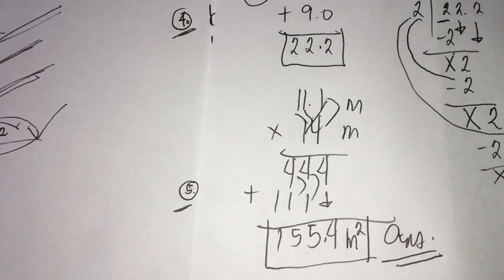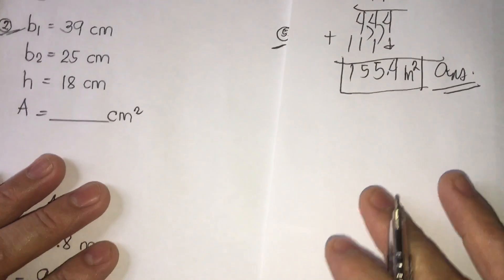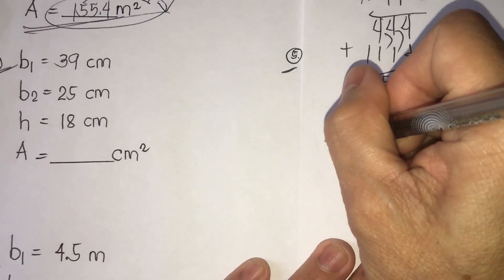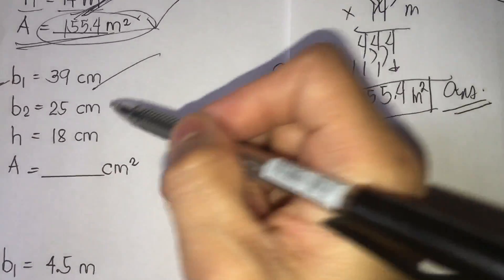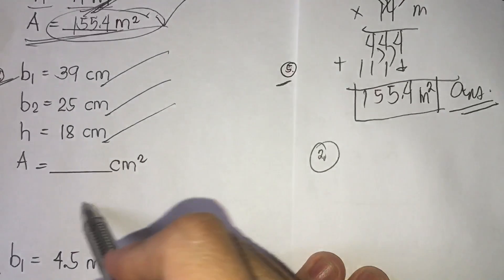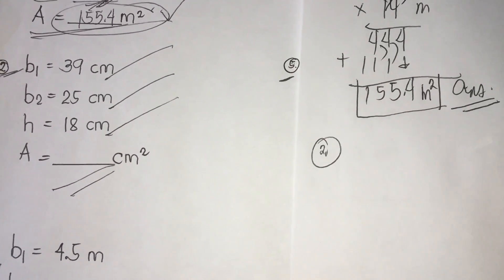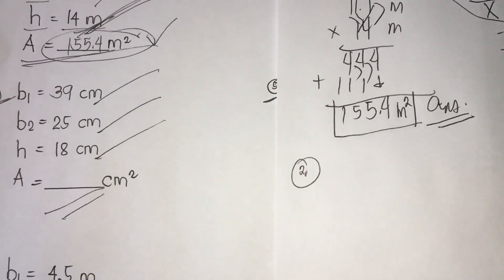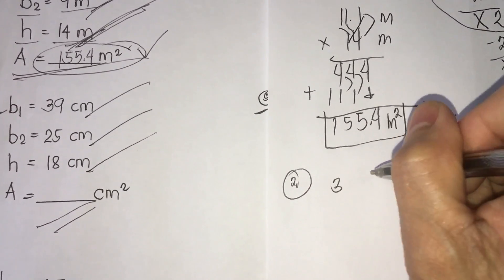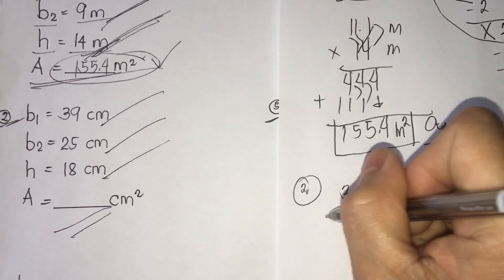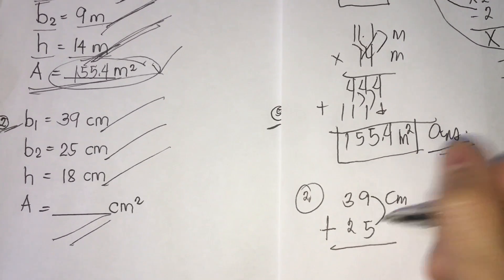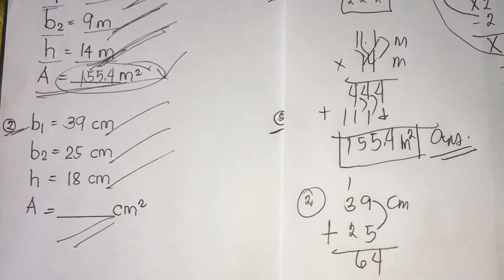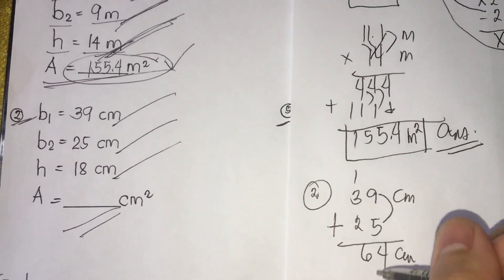We're going to proceed to number two. Same procedure — for number two the given is: b1 is 39 cm, b2 is 25 cm, and height is 18 cm. Same formula: A equals b1 plus b2 over 2, times height. So 39 plus 25 — that's 4, regroup 1, so we have 64 centimeters.